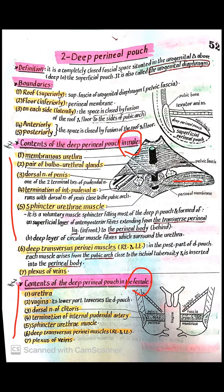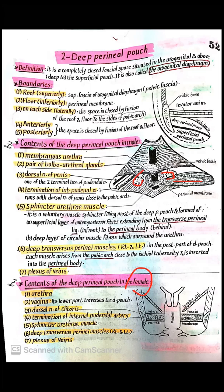The two terminal branches of the internal pudendal artery are the dorsal artery of the penis and the deep dorsal artery of the penis. The two muscles are the sphincter urethrae and the deep transverse perineal muscle. Also present are the openings of the two bulbourethral glands on both sides, opening into the posterior aspect of the membranous urethra, and plexuses of veins. In females, the deep perineal pouch contains the urethra and vagina, dorsal nerve of the clitoris, termination of the pudendal artery, sphincter urethrae, transverse perineal, and plexus of veins.